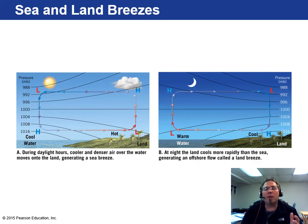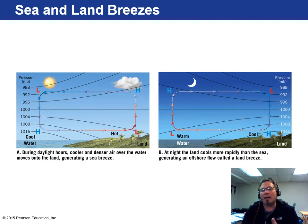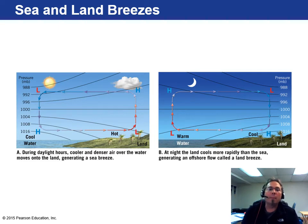During daytime, cooler, denser air over the water moves onto the land — this is exactly why we get cooler temperatures by the lake in summertime in Milwaukee. You might head down to the lake on an 80-degree day and find it's only 50 degrees because the water is still cold. This is called a sea breeze — or in our case, a lake breeze. At night, the land cools more rapidly than the lake, and the wind switches around about 180 degrees and flows back out over the lake.